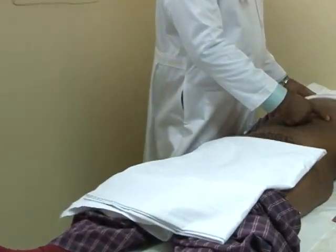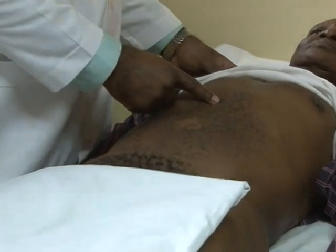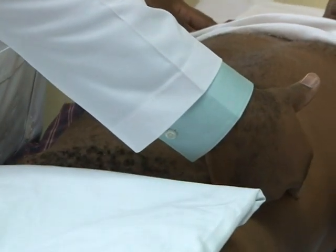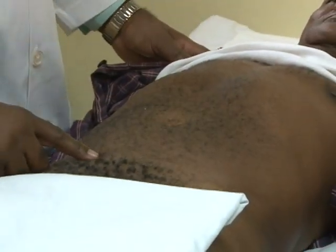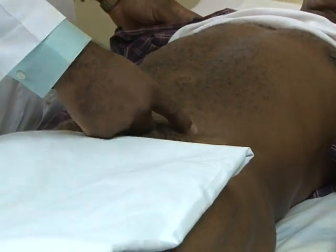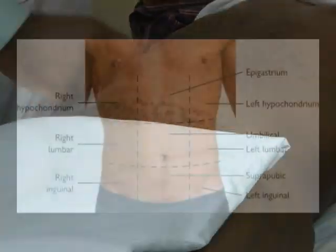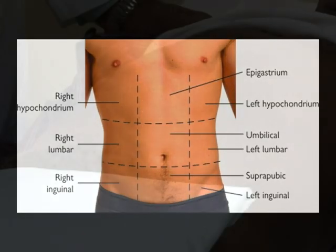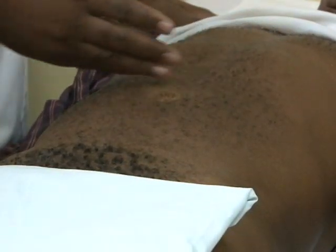We need to remember that it is customary for the abdomen to be divided into nine regions: the right hypochondrium, left hypochondrium, epigastrium, right flank or lumbar region, umbilical region, left flank or lumbar region, right iliac fossa or inguinal region, left iliac fossa or inguinal region, and hypogastrium or suprapubic region. These are divided by the intersection of imaginary planes — two horizontal and two sagittal.